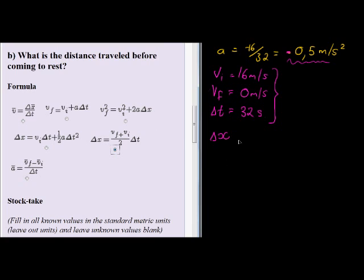Okay, so using that formula, I am going to see that X is equal to future velocity plus initial velocity divided by 2 times time. In my substitution step, I know my future velocity is 0. My initial velocity was 16 divided by 2 times time is 32.